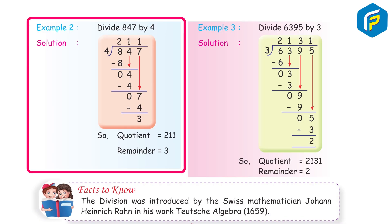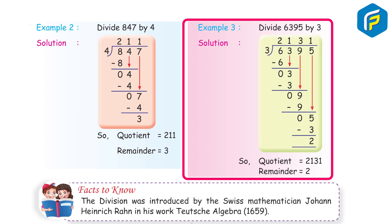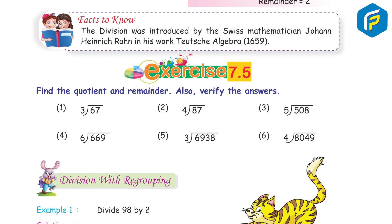Example 2: Divide 847 by 4. Solution: quotient 211, remainder 3. Example 3: Divide 6395 by 3. Solution: quotient 2131, remainder 2.